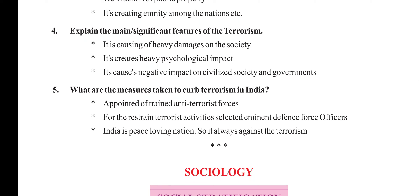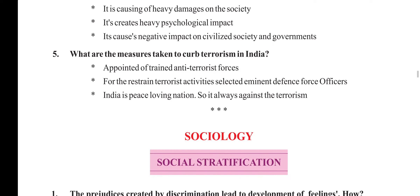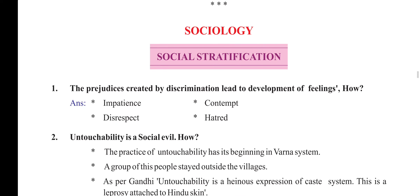Explain the main features of terrorism. It causes heavy damage to society. It creates heavy psychological impact and a negative impact on civilized society and governments. What are the measures taken to curb terrorism in India? Appointment of trained anti-terrorist forces for restraining terrorist activity, and selection of eminent defense force officers. India is a peace-loving nation and is always against terrorism.